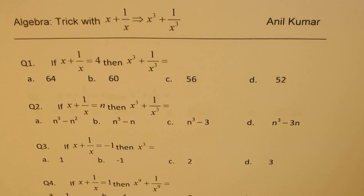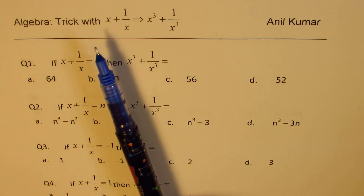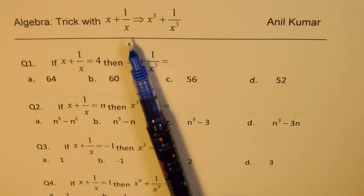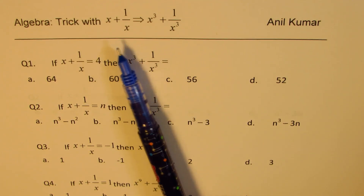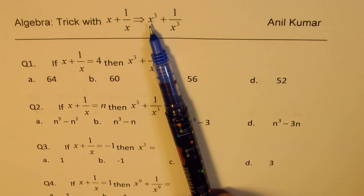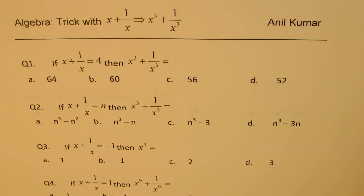I'm Anil Kumar. Welcome to my series on algebra. Here is a very important question which we are going to look into in detail. We want to consider the sum of a number and its reciprocal, and what happens to the sum of their cubes — that is, the cube of a number and the reciprocal cube of the number. We have four questions related to this, which are very popular in many multiple-choice test papers. We'll also learn a few tricks to solve them within a second.